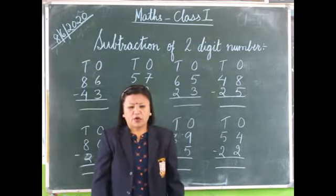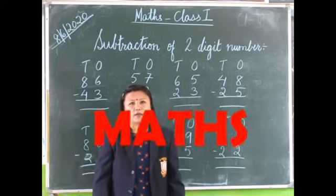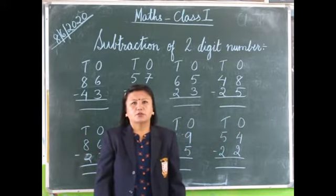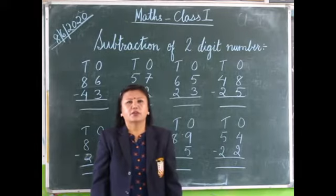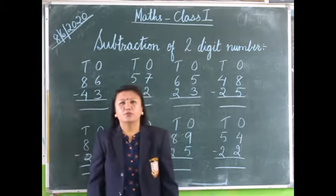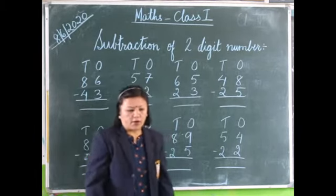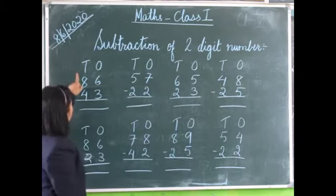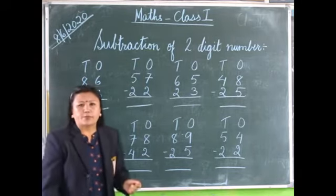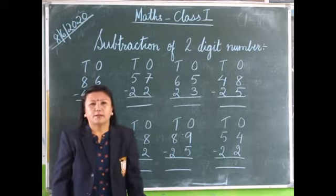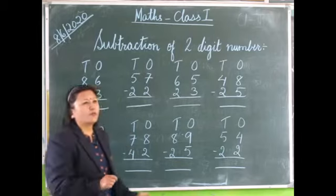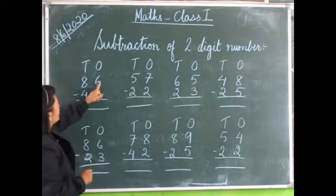Good morning children. We have already learned subtraction of single digit numbers, but now we are going to learn subtraction of two digit numbers. That is two numbers having ones position and tens position. For example, 86 minus 43. Whenever we subtract two or more digit numbers, we always start from our right side — that is from the ones position.